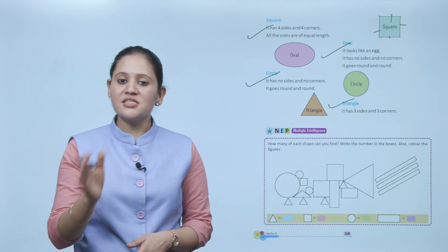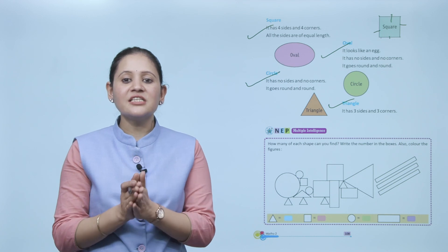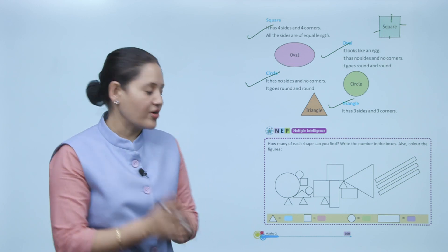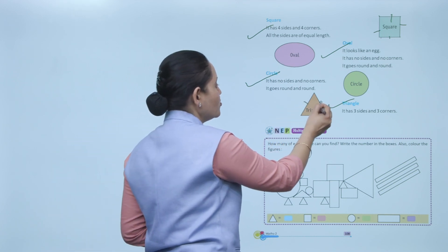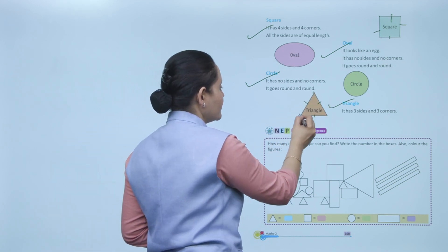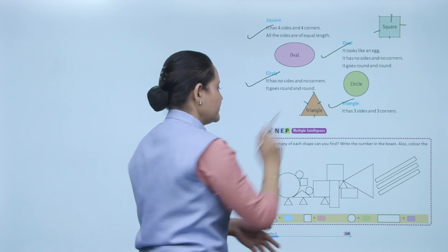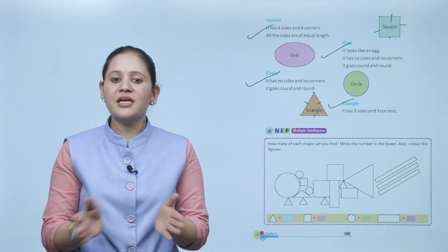Next is triangle. 'Tri' means three. A triangle has three sides and three corners: one, two, and three sides, and three corners.